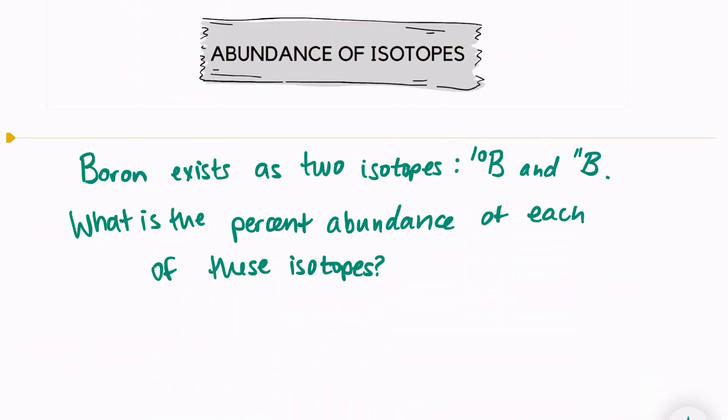Hi, welcome back. Today we're going to look at finding the percent abundance of isotopes, and we can do that just by using an equation and the periodic table.